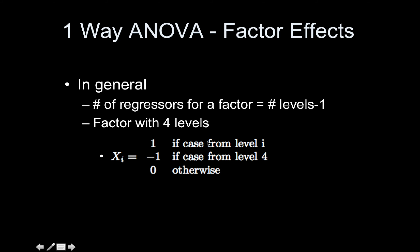Here's the general setup. In your regressor, you fill in a one or a minus one, sometimes zeros — some setups do not have zeros and only have ones and minus ones. Each regressor corresponds to a specific level. My first regressor focuses on level one, and then you choose a baseline level. I usually just choose the last one — it doesn't matter as long as you're consistent. I'm choosing level four, so all regressors are in comparison to level four. For each row, the regressor gets a value of one if it's from the level currently being modeled, negative one if it's from level four, and zero otherwise.